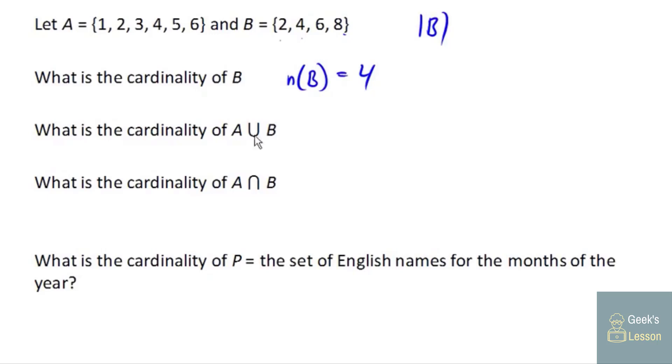Okay, what is the cardinality of A union B? Well, in order to answer that, let's go ahead and find the union. So we need to union these two sets. So we've got everything from A. And now we're gonna combine that with everything from B. We already have 2, we already have 4, we already have 6. We just need 8. And this set has 1, 2, 3, 4, 5, 6, 7 elements. So the number of elements in A union B is 7.